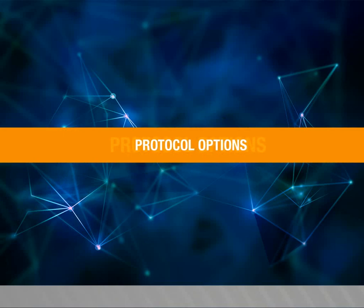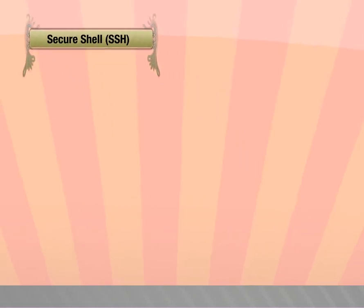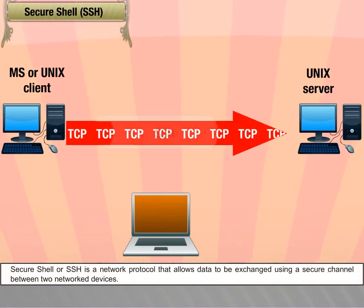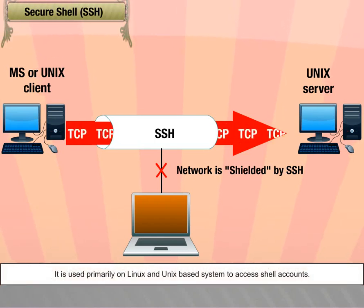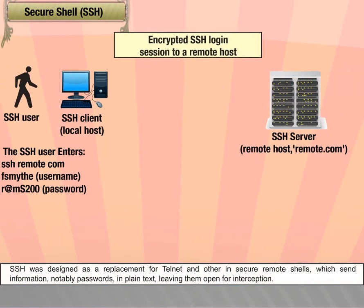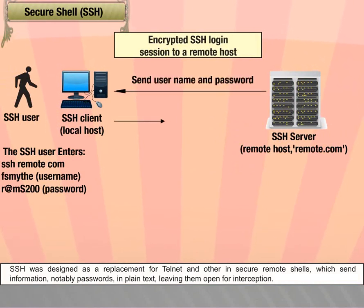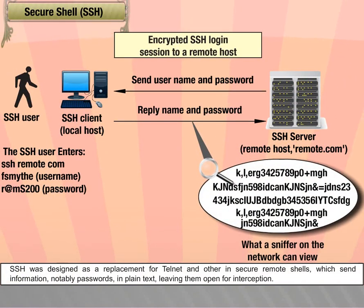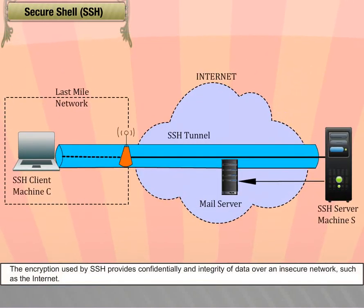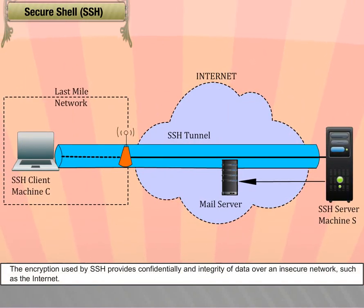Protocol options: Secure Shell (SSH) is a network protocol that allows data to be exchanged using a secure channel between two networked devices. It is used primarily on Linux and Unix-based systems to access shell accounts. SSH was designed as a replacement for Telnet and other insecure remote shells which send information, notably passwords, in plain text, leaving them open for interception. The encryption used by SSH provides confidentiality and integrity of data over an insecure network such as the internet.